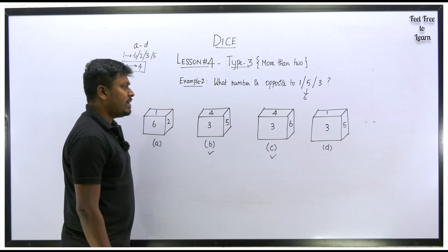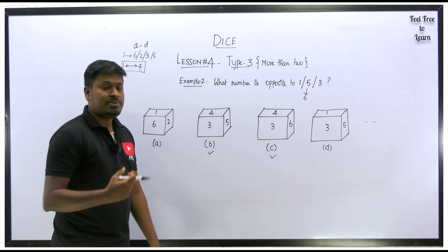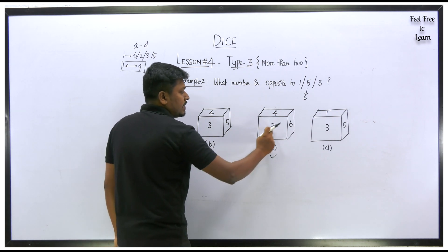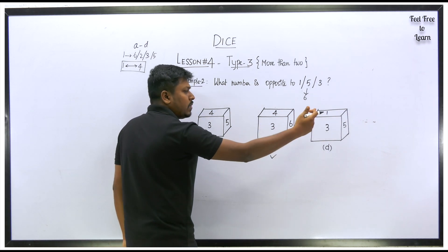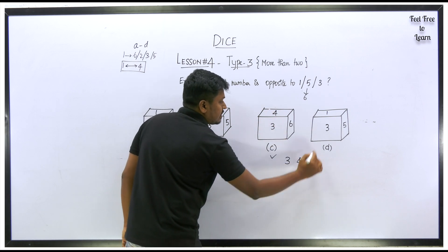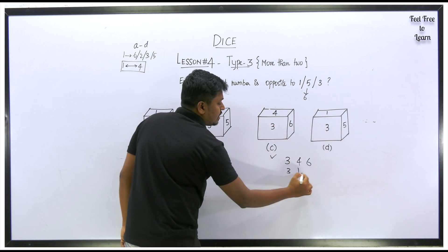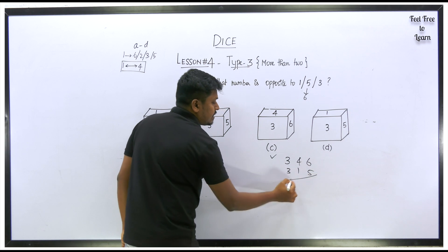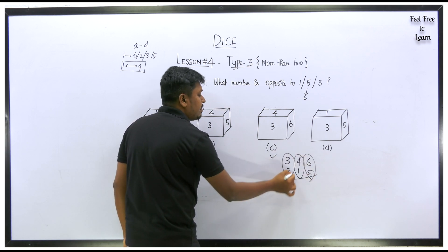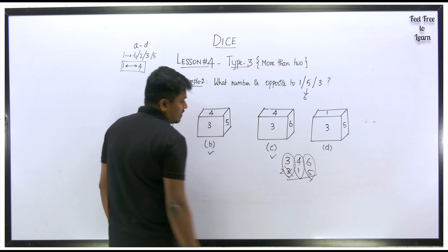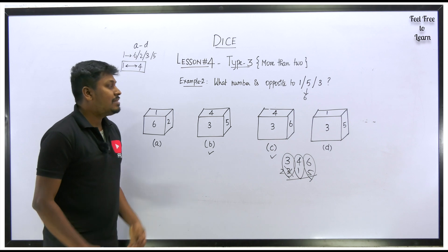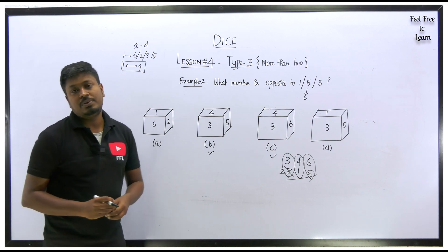For the third question — which number is opposite to 3 — we find diagrams containing number 3 and apply the clockwise direction. From one diagram: 3, 4, 6. From another: 3, 1, 5. This shows 4 is opposite to 1, and 5 is opposite to 6. The only remaining number is 2, so 3 is opposite to 2.